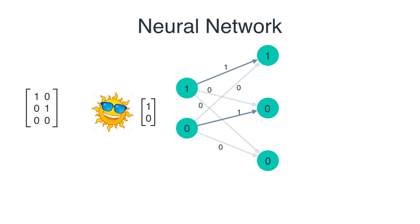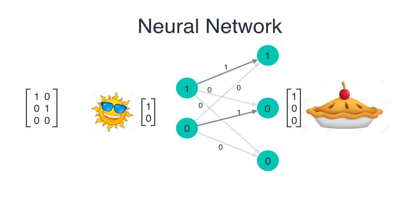That's why neural networks are really representing a bunch of matrix multiplications. Here you get the vector (1,0,0), which is the vector corresponding to an apple pie. And you can check that if you input the vector corresponding to a rainy day — which is (0,1) — you're going to get (0,1,0), which corresponds to a burger.